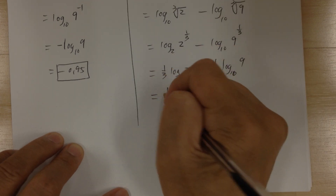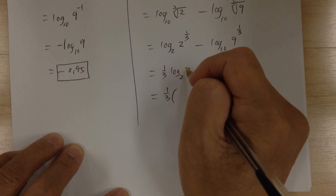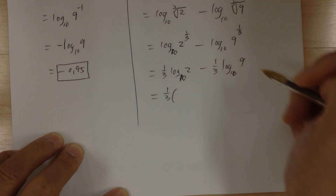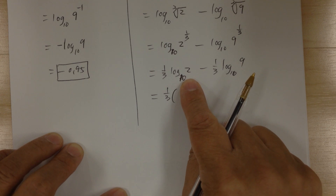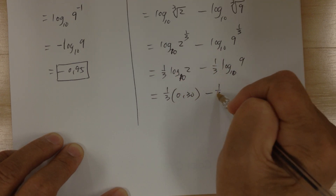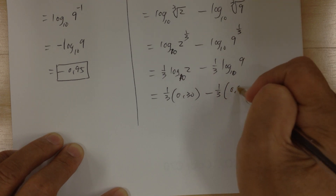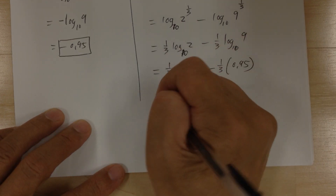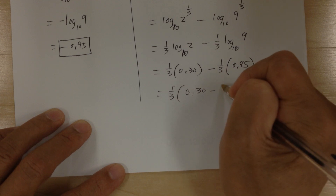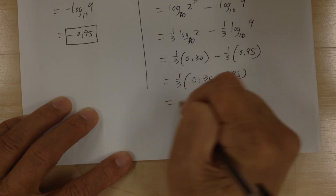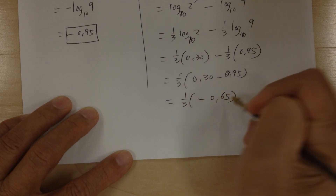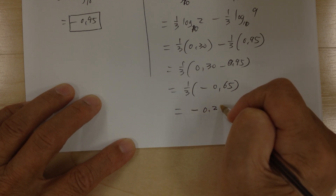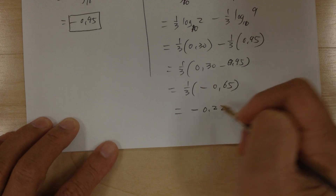Then you can evaluate. Log 2 equals 0.30, log 9 equals 0.95. It would be easier to factor out the 1 third first: 1 third times (0.30 minus 0.95) equals 1 third times negative 0.65, which equals approximately negative 0.22.